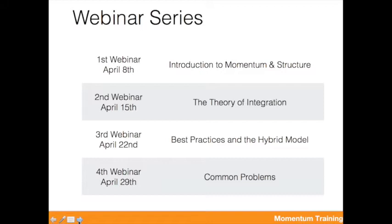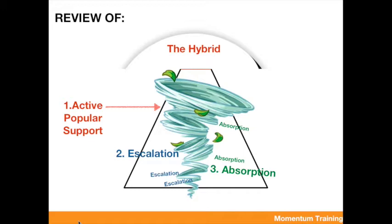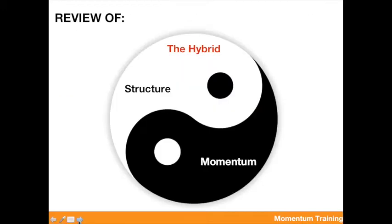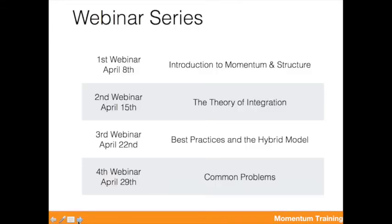We'll do a quick review. We already went through the introduction of momentum and structure, the two dominant traditions. Our main argument, as we said in the first webinar, was that if we integrate momentum and structure, then a lot of change could happen — it's the moment where revolution happens, where we can really engage masses of people. Then we asked, if integration is the way to go, what is our theory of how integration is done?